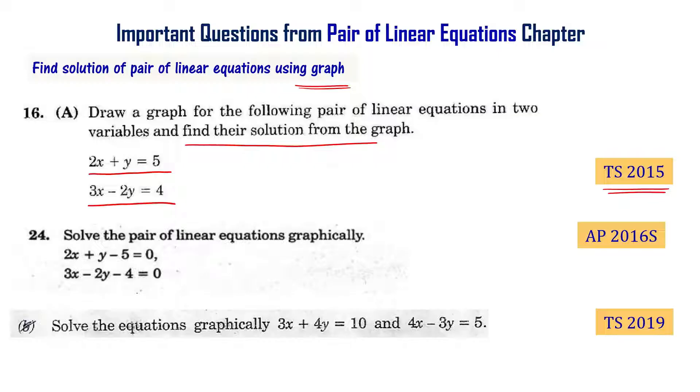Solve the pair of linear equations graphically: 2x + y - 5 = 0 and 3x - 2y - 4 = 0. These two questions are the same. This particular question is asked in 2016 AP supplementary exam.